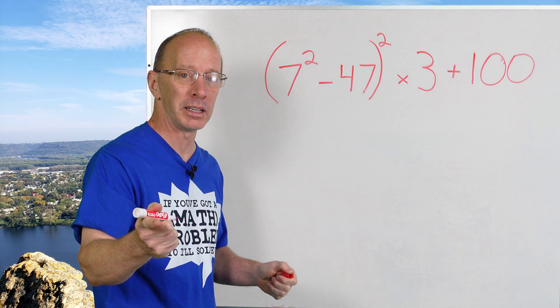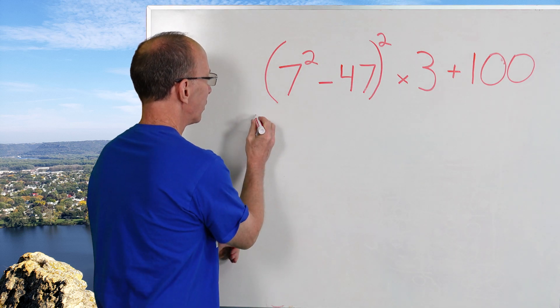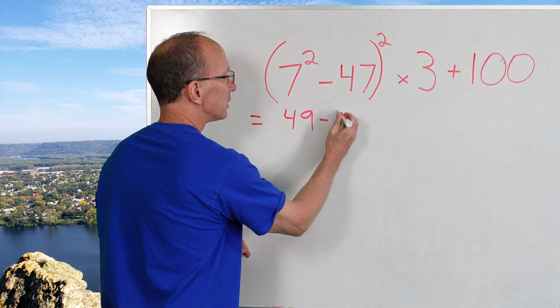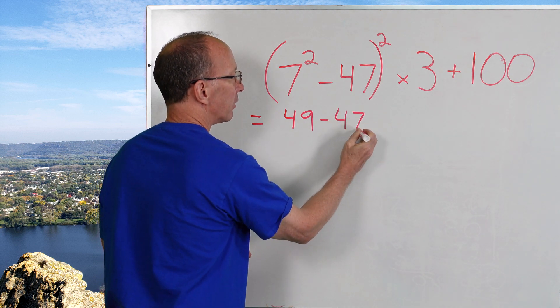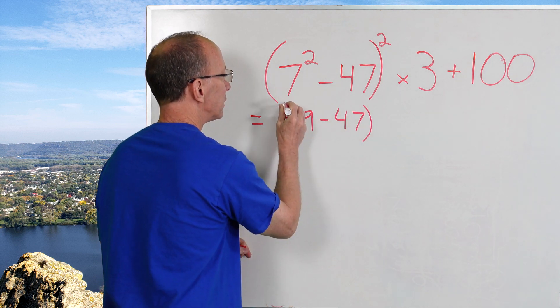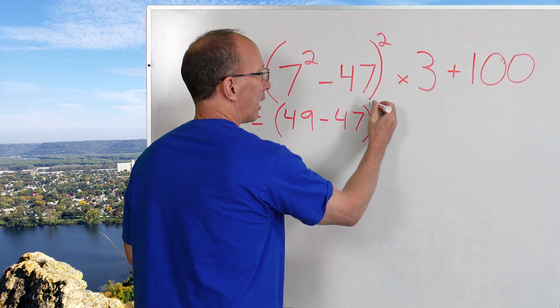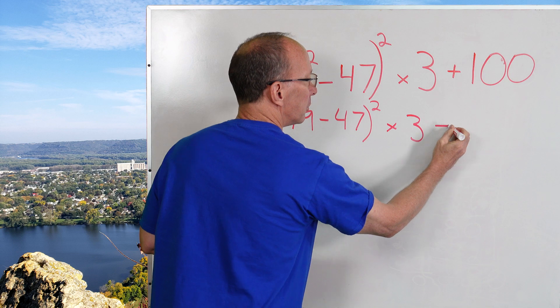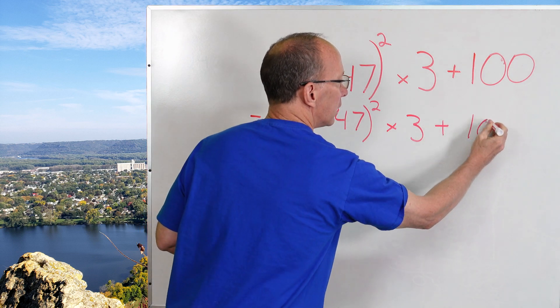7 times 7 would be 49. So I'm going to go ahead and put my equal sign here. This would be 49 minus 47, and I'm going to still put my parentheses around here. And then that would be to the second power times 3 plus 100.